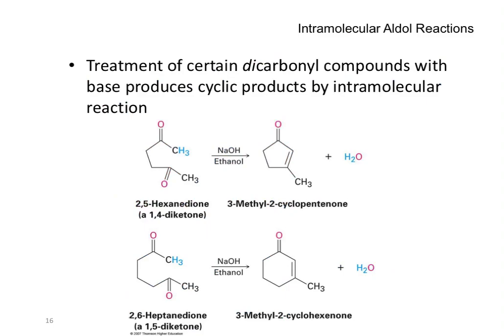Let's do the last one — the intramolecular aldol condensation. What happens if you have two ketones within the same molecule? It's going to end up in a ring structure — you have the donor and the acceptor within the same molecule. A couple of things: you would have a dicarbonyl compound with two ketones carrying out this intramolecular reaction. If it is a six-membered chain, that is going to end up with a five-membered ring. If it's a seven-membered dione, that will end up with a six-membered ring.